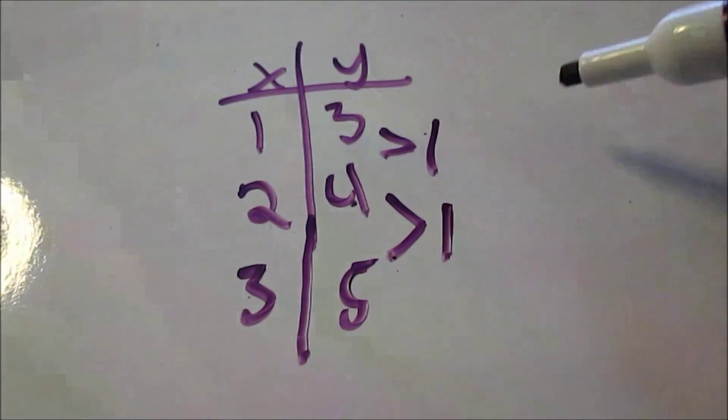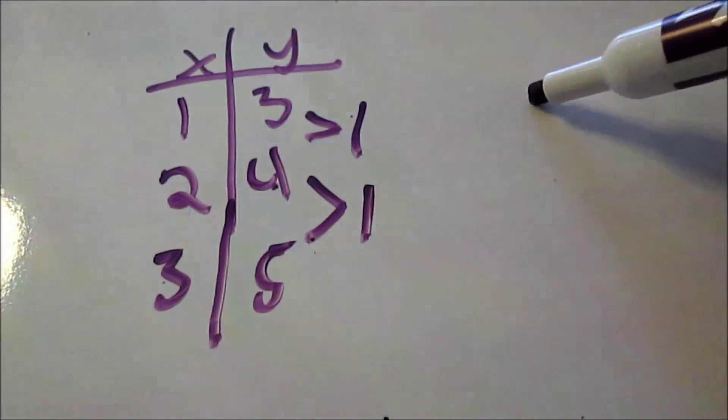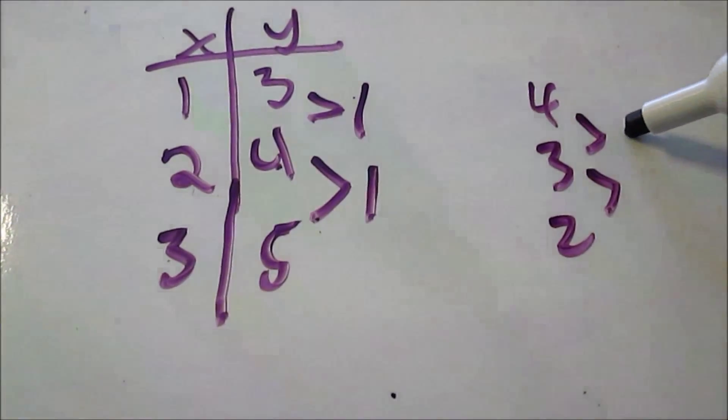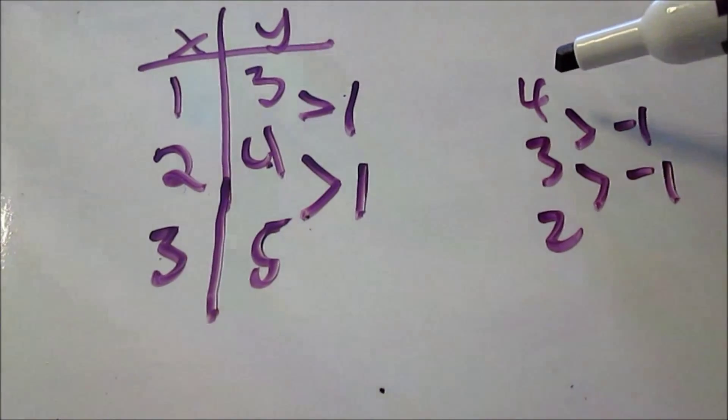Now, if there were ever a case where it was decreasing, this is just a side note. If it was ever decreasing, for example, four, three, two, the change would not be plus one, it would be minus one. That's just for future reference.